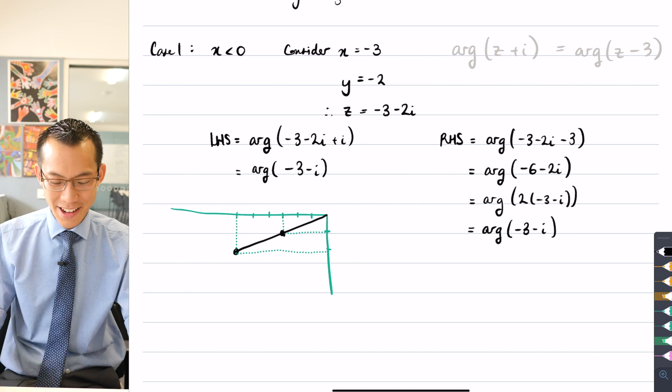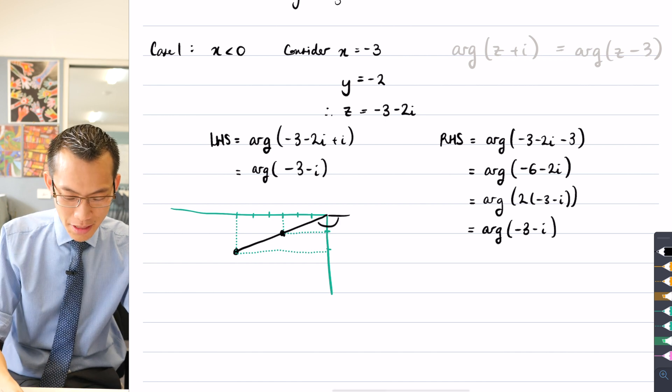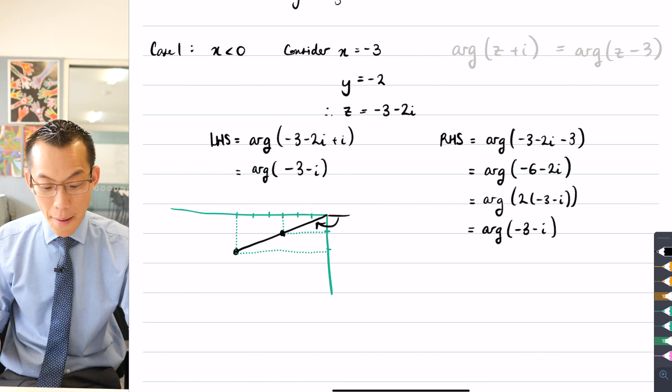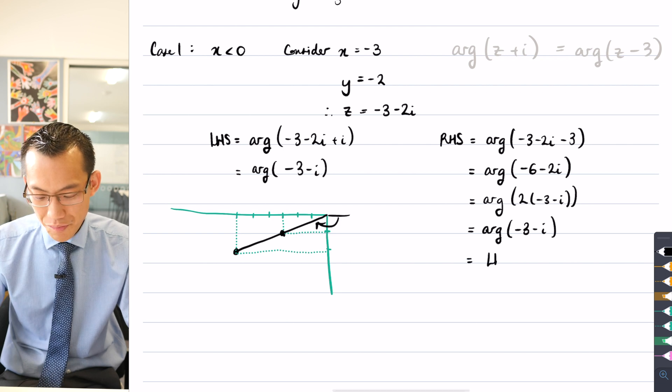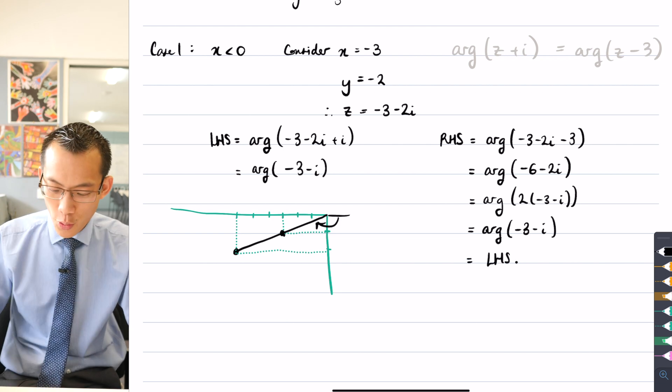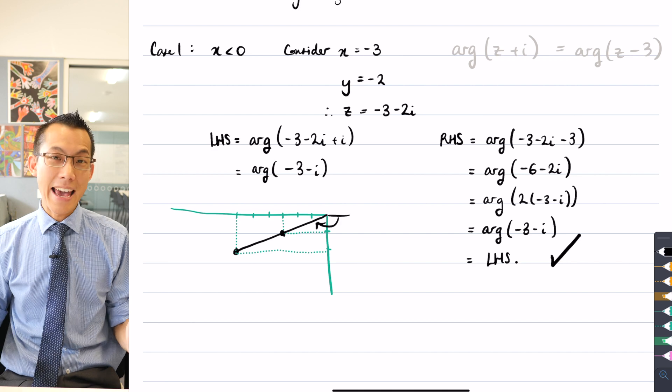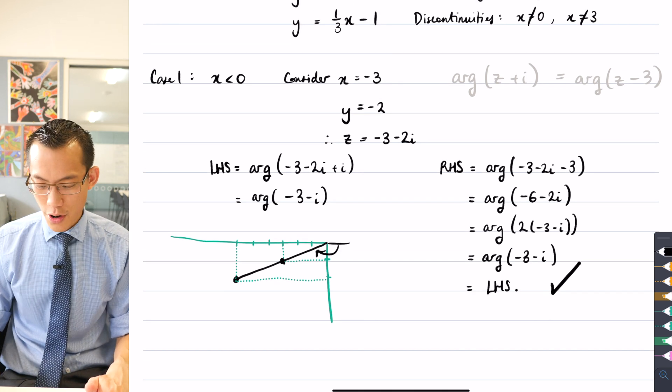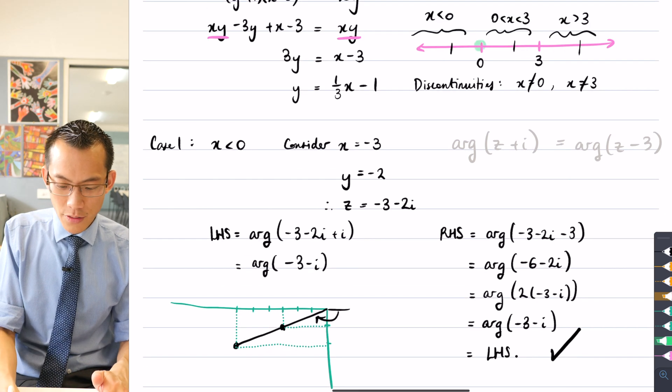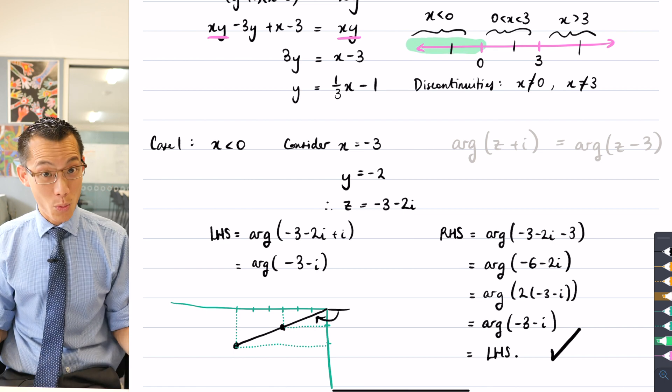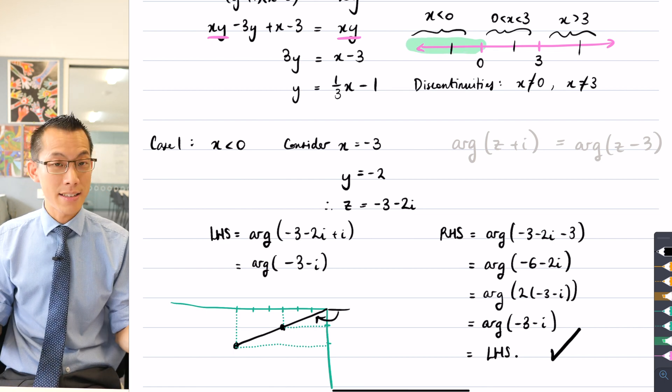So therefore, its argument is the same as that of minus three minus i. Now again, I don't know what that angle is. I don't know what the size of that rotation will be, but I can say that it's the same as the left-hand side. So therefore, tick this case, x is less than zero, which is just going back to my number line over here, this part here, this part works. So I can say at least I've made some progress.